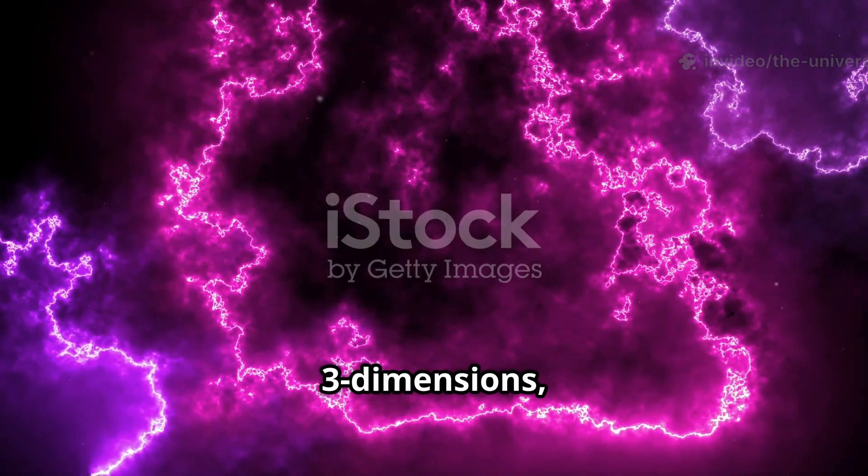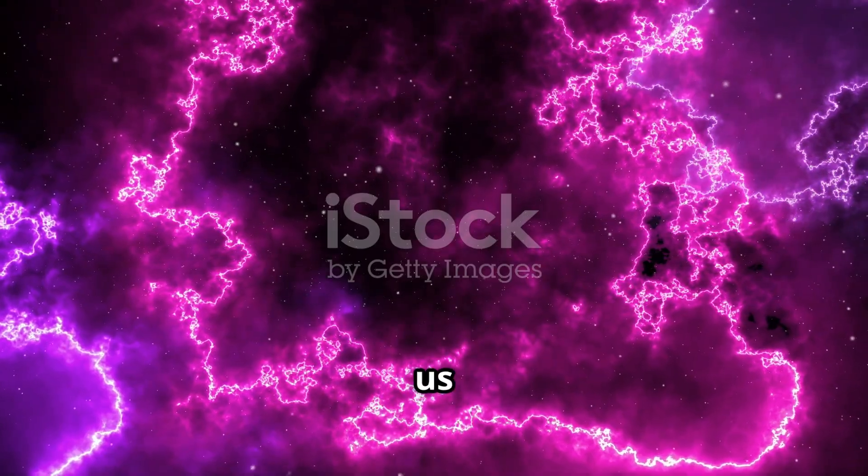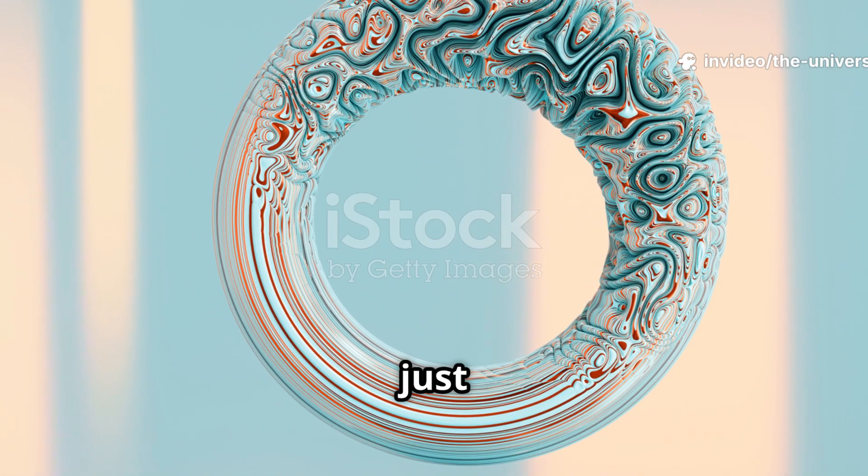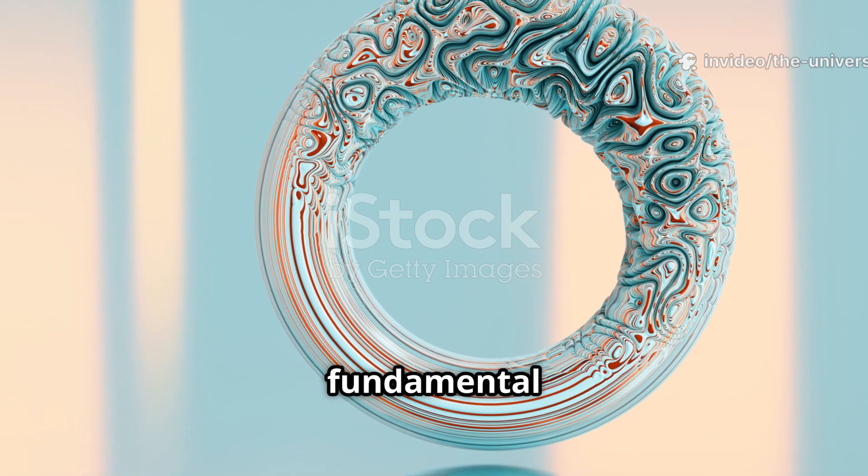When we roll it up in three dimensions, we're embedding the two-cylinder into three-dimensional space, but that's just us embedding it into 3D. So even though it looks curved when embedded in 3D, that's just a product of the embedding. It's actually still a flat geometry in its fundamental domain.